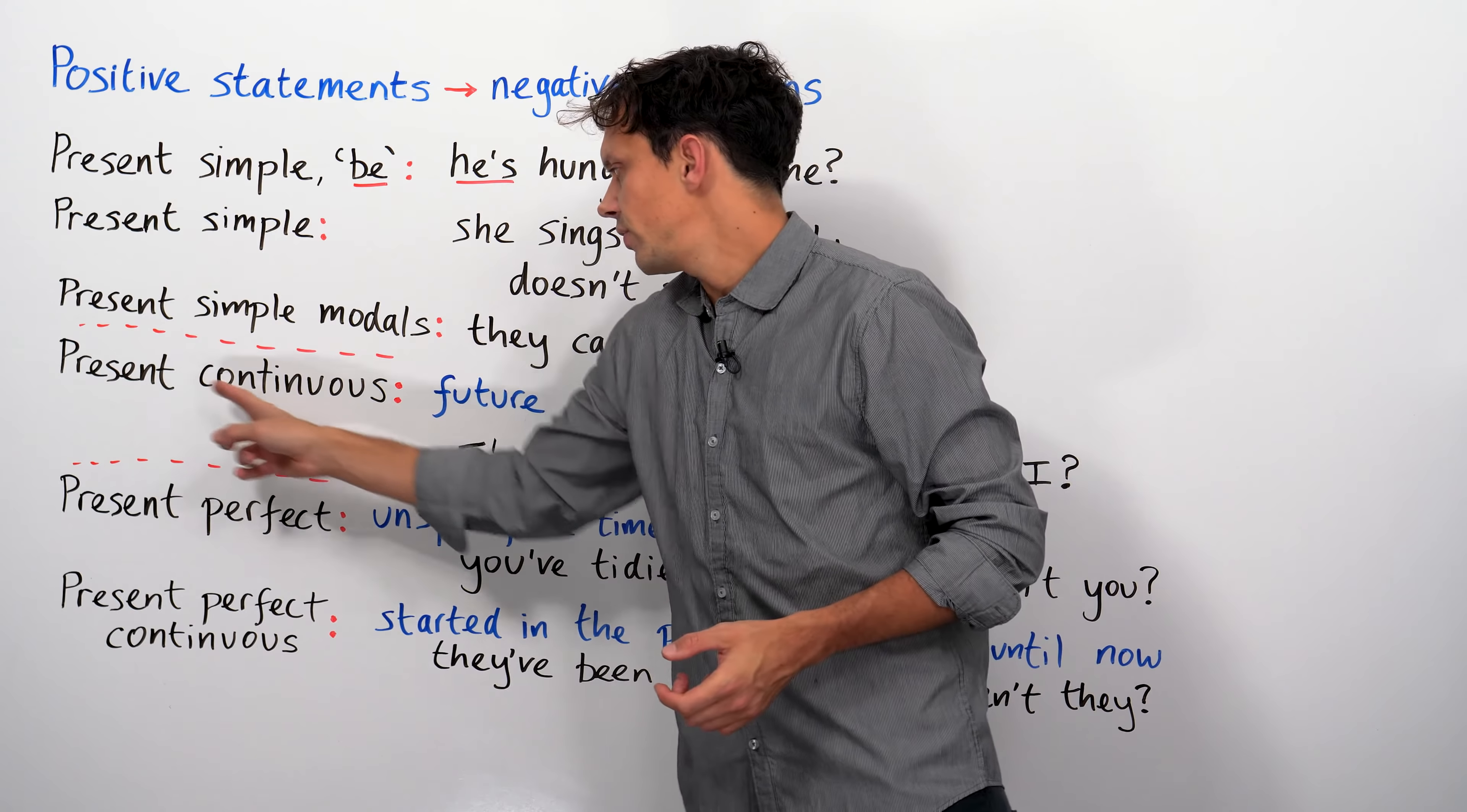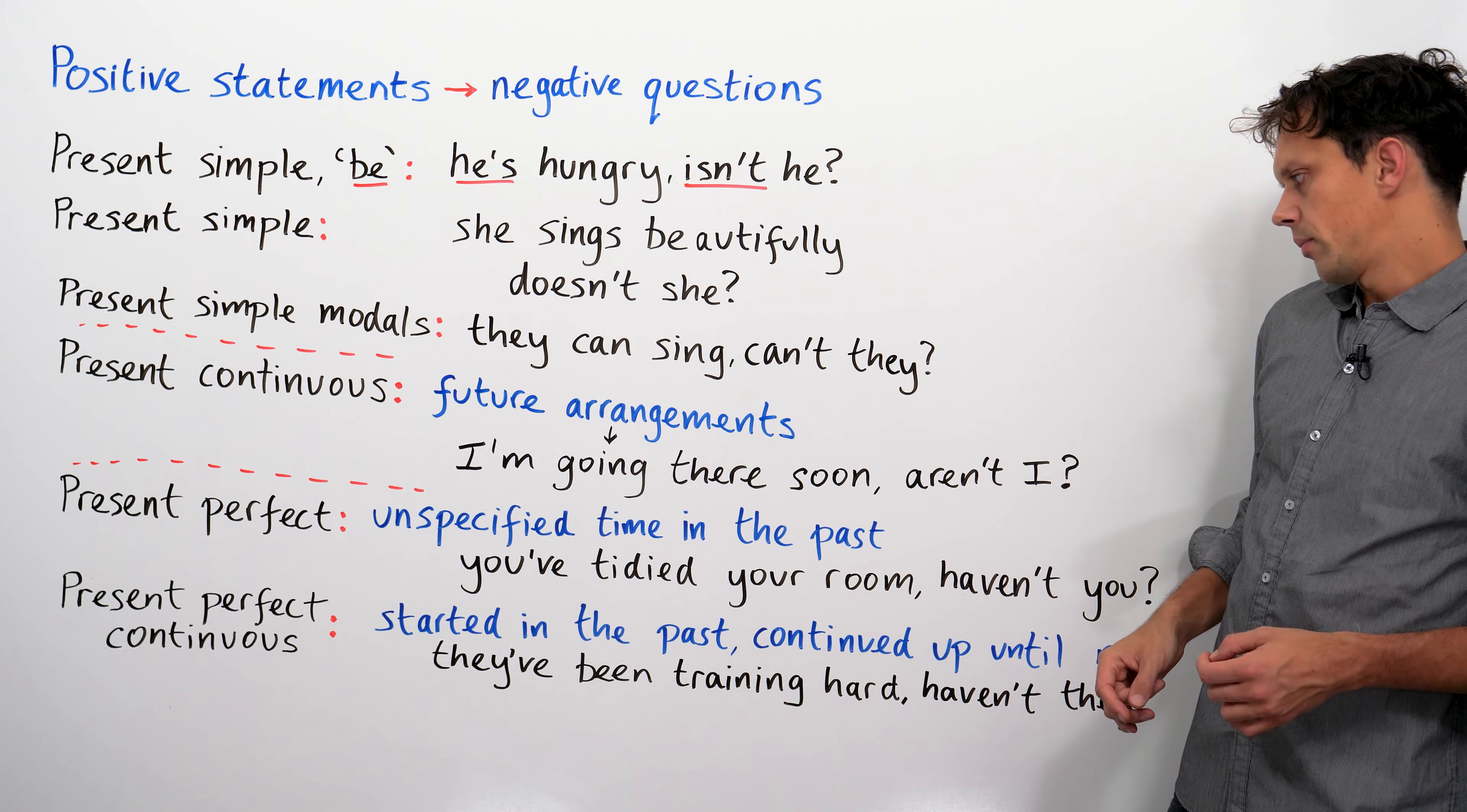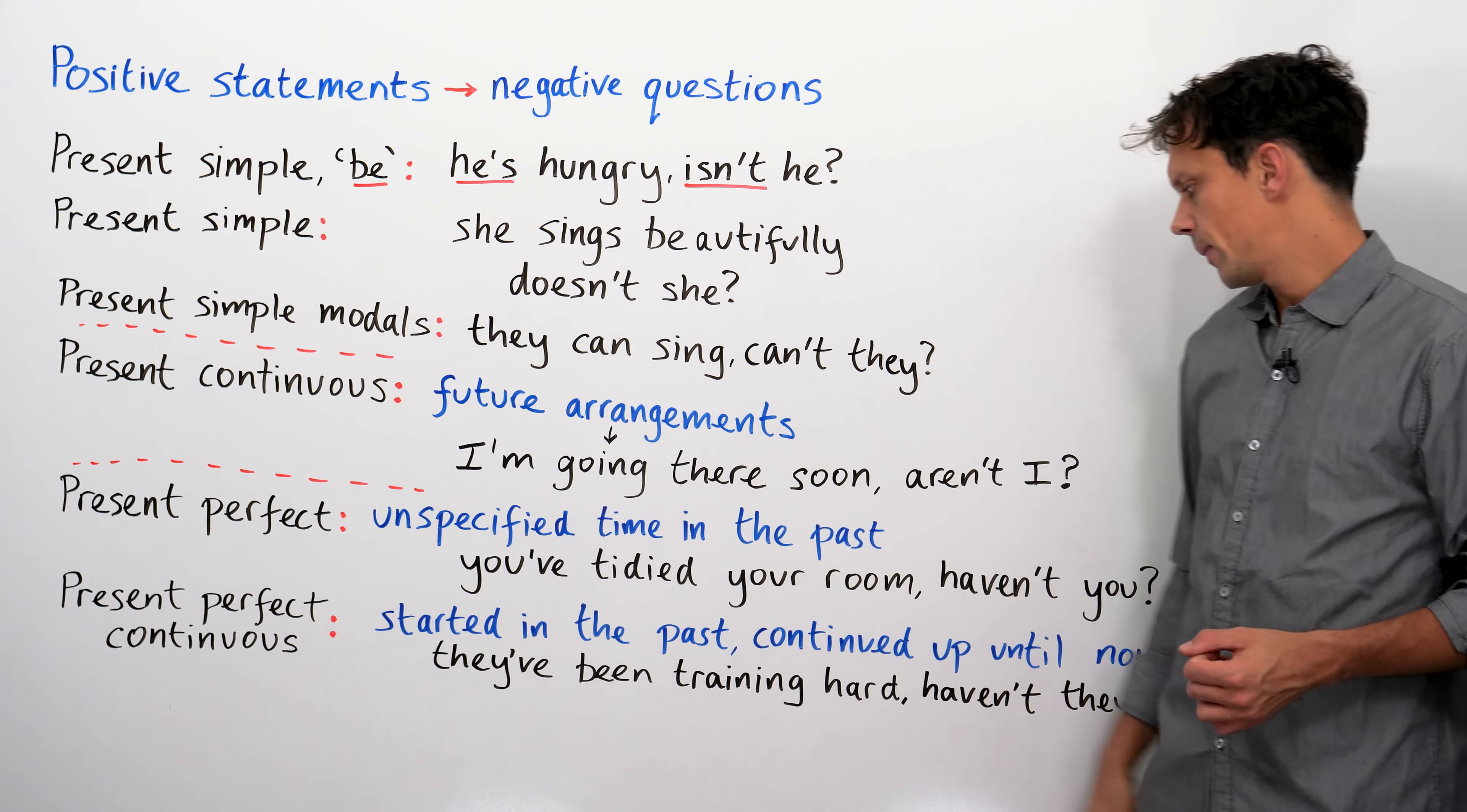Now, the present continuous, we normally use to talk about future arrangements, even though it's technically in the present tense. I'm going there soon, aren't I? He's spending Christmas here, isn't he?